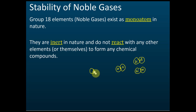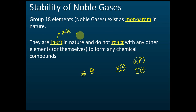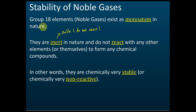Noble gases are mono-atomic because they are very stable and they don't like to bond with other atoms. Even neon and neon don't bond together. They exist as single atoms — they are inert. Inert means very stable and they do not react with other substances, not even with other elements or themselves, so they do not form any chemical compounds.